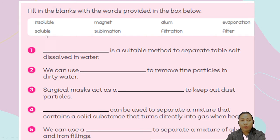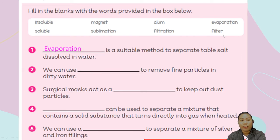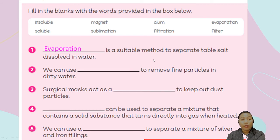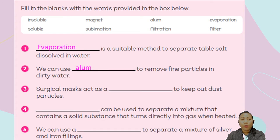Are you ready? Let's have the answers. Number one: evaporation. Evaporation is a suitable method to separate table salt dissolved in water. Number two: we can use alum to remove fine particles in dirty water.